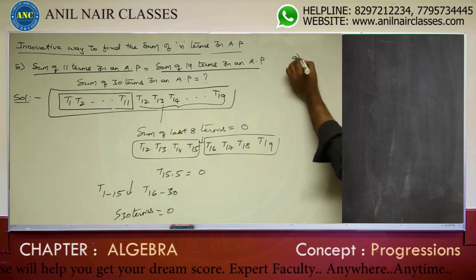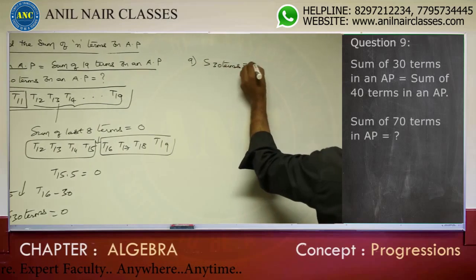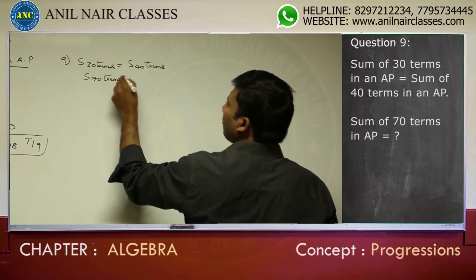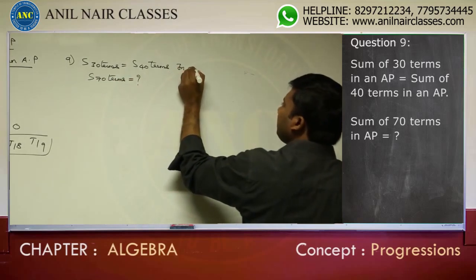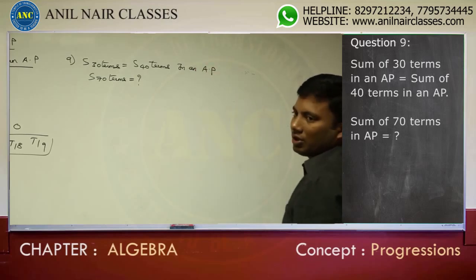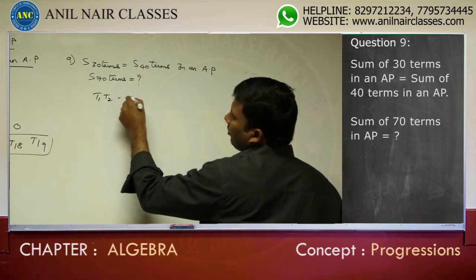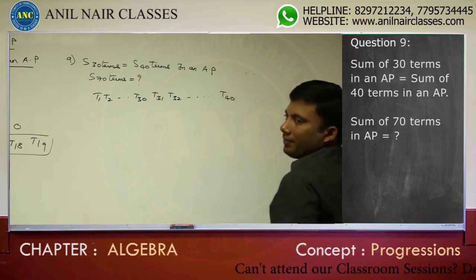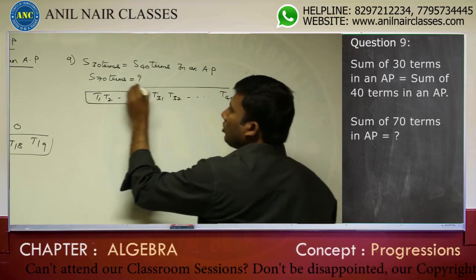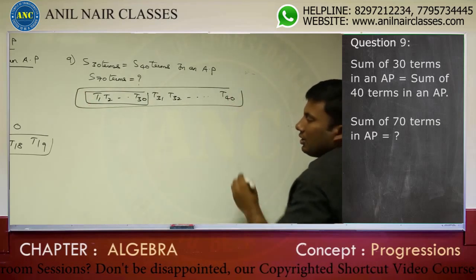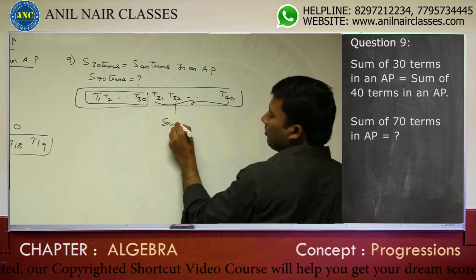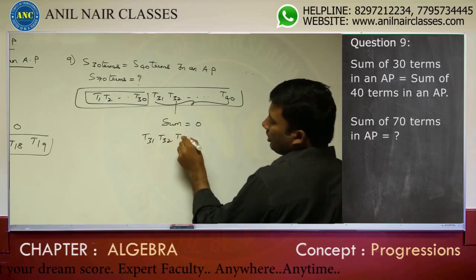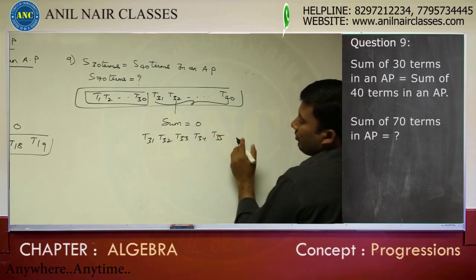One more question: the sum of 30 terms is equivalent to the sum of 40 terms in an arithmetic progression. That means the last 10 terms — from T31 to T40 — have a sum of 0. There are 5 terms to the left and 5 terms to the right of the middle of those last 10 terms.